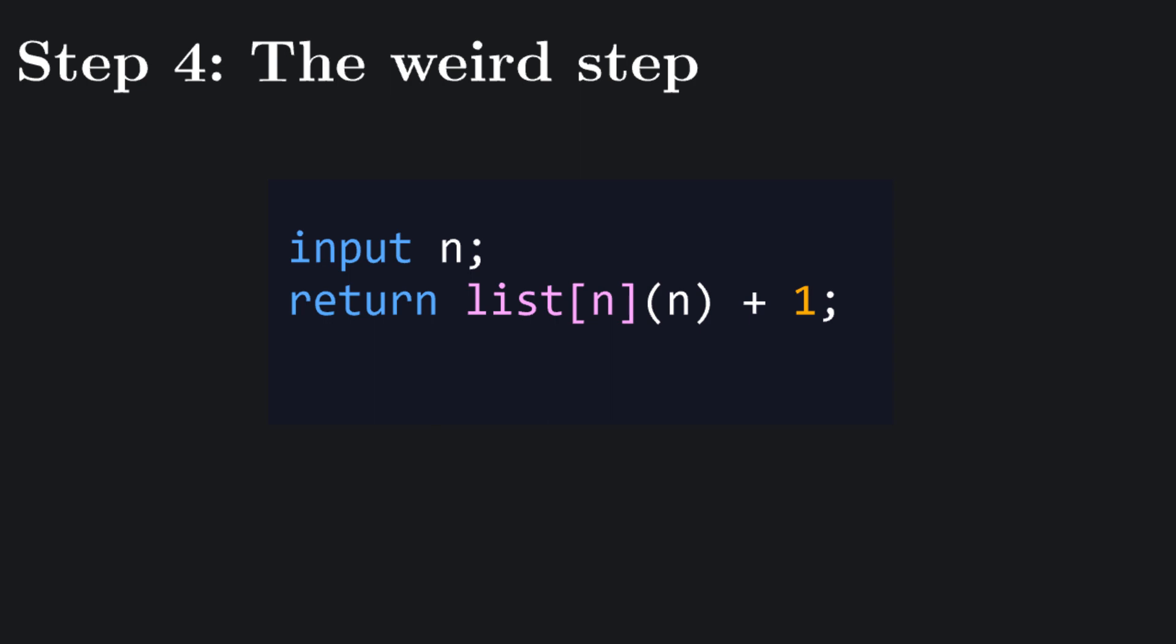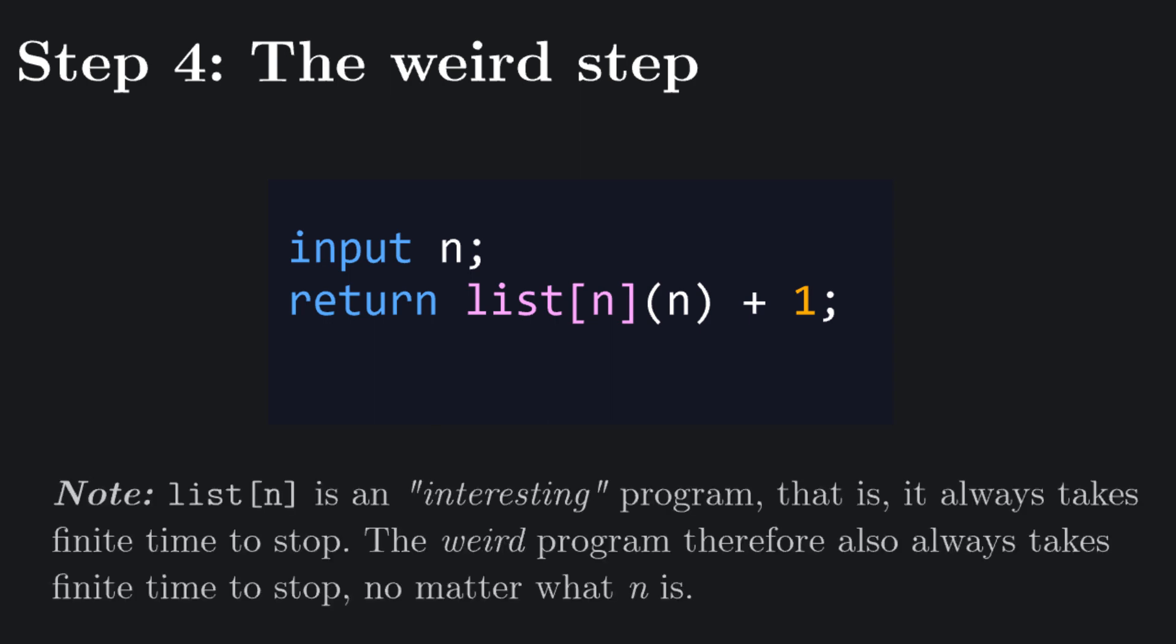Now, let's do something weird. Let's define an interesting program that takes an integer n as its input and returns the result of the nth program in our list, called on n itself, plus 1. This is indeed an interesting, that is, computable program, because it takes an input and returns an output in a finite amount of time, because the nth element of the list always takes a finite amount of time to stop.